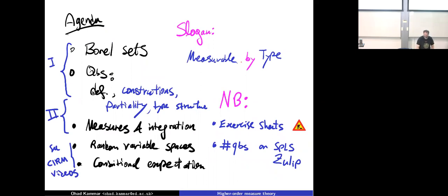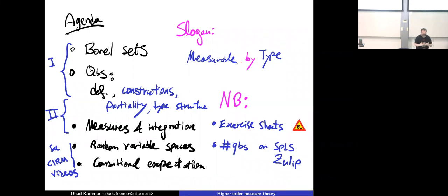Yesterday we talked about Borel sets and quasi-Borel spaces — we only covered the definition, and the slogan is 'measurability by type.' Today we'll talk about constructions: taking different spaces and putting them together, notions of partiality, and type structures for constructing things syntactically. Just as we have compositional ways of putting programs together, we can recast them as compositional ways of putting spaces together.